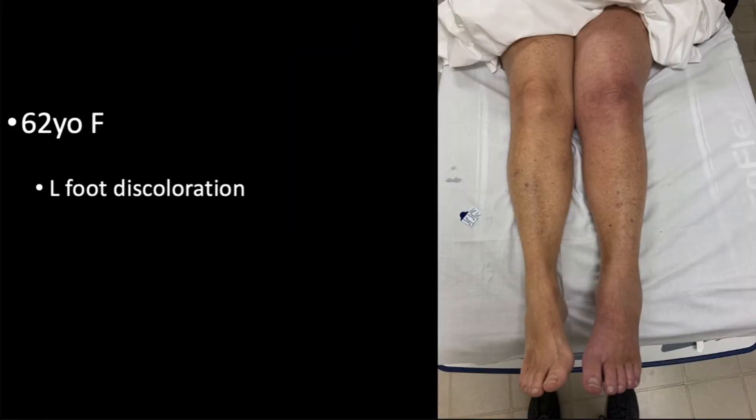This case starts with a 62-year-old female presenting after noticing some discoloration of her left foot over the past 24 hours. While the patient was concerned about the foot, I was more concerned about the appearance of the entire leg. There was discoloration and enlargement when compared to the contralateral leg. Even with the impressive physical exam, she denied pain or paresthesias.